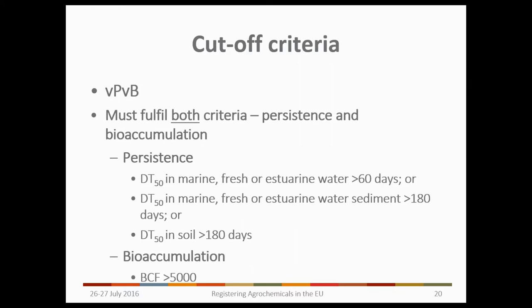Finally, moving on to VPVBs — to qualify as a VPVB you need to fulfil both criteria for persistence and bioaccumulation. For bioaccumulation we're back to a BCF greater than 5,000. For persistence there is again a series of DT50 values that would trigger the criteria for water, sediments, and soil, which you can see on the slide.